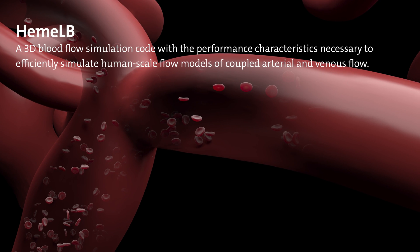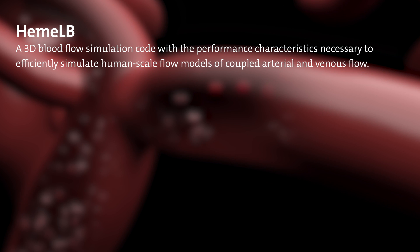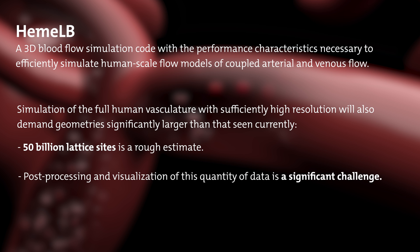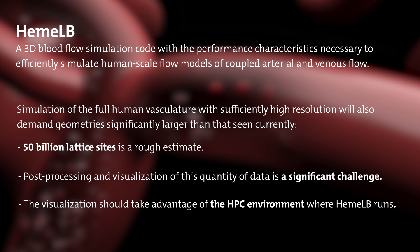HEMAL-B is a 3D fluid dynamics code that is well positioned to simulate the arterial and venous blood flow of the virtual human. Virtual human simulations of blood flow will generate large volumes of data, spread over an estimated hundreds of billions of data points. The challenge lies within the post-processing and visualization, so it makes sense to take advantage of the HPC environment where HEMAL-B runs.